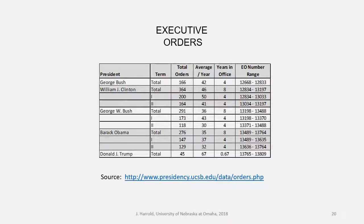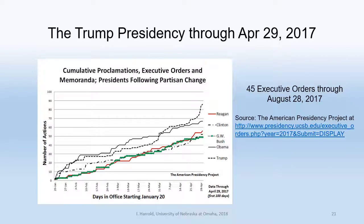Looking at more recent presidents — George H.W. Bush, Bill Clinton, George W. Bush, Barack Obama, and Donald Trump — President Trump through the end of April 2017 had signed 45 executive orders and by August 28th was on pace to have more executive orders per year than any of his immediate predecessors. The question of what all that means for the power of the presidency remains open.